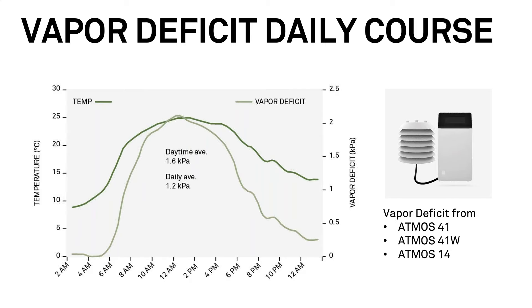The Atmos 41, Atmos 41W, and our Atmos 14 with the ZL6 logger — any of those will give the vapor pressure and vapor deficit numbers.